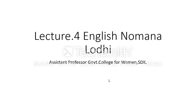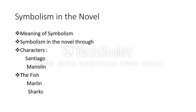Today is our lecture number four and it is a very important assignment of the novel — symbolism in the novel. Symbolism means the representation of objects, moods, and ideas through the medium of symbols. A symbol is something that means more than what it actually is.